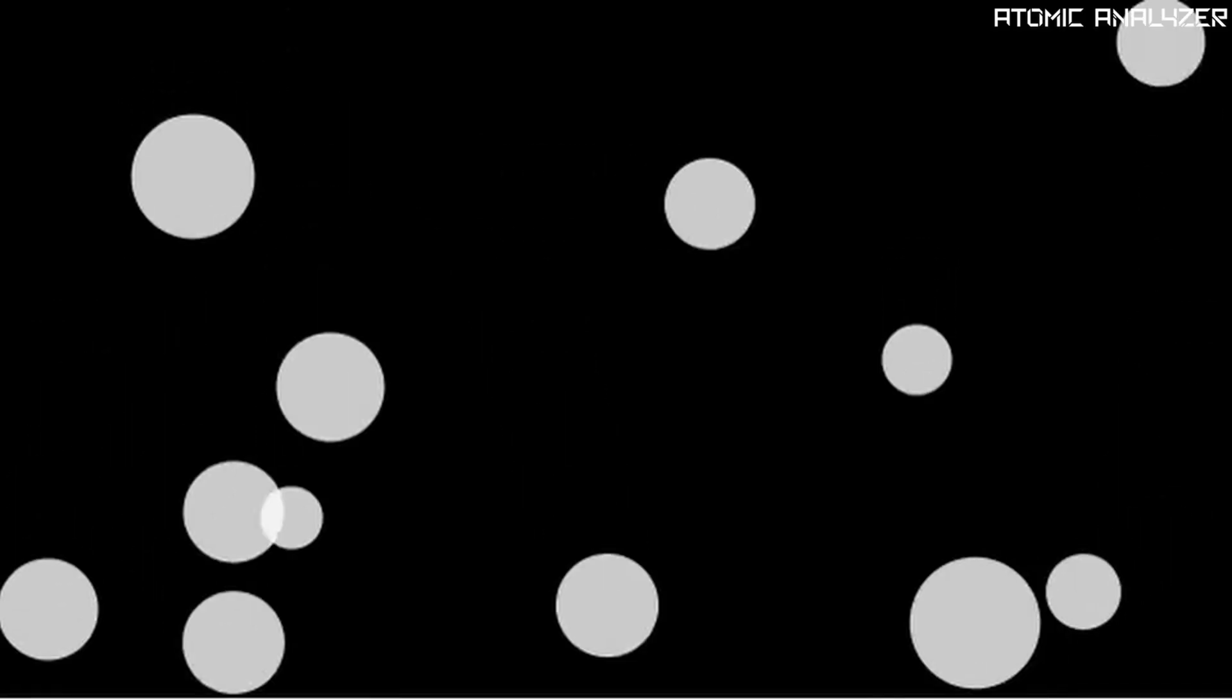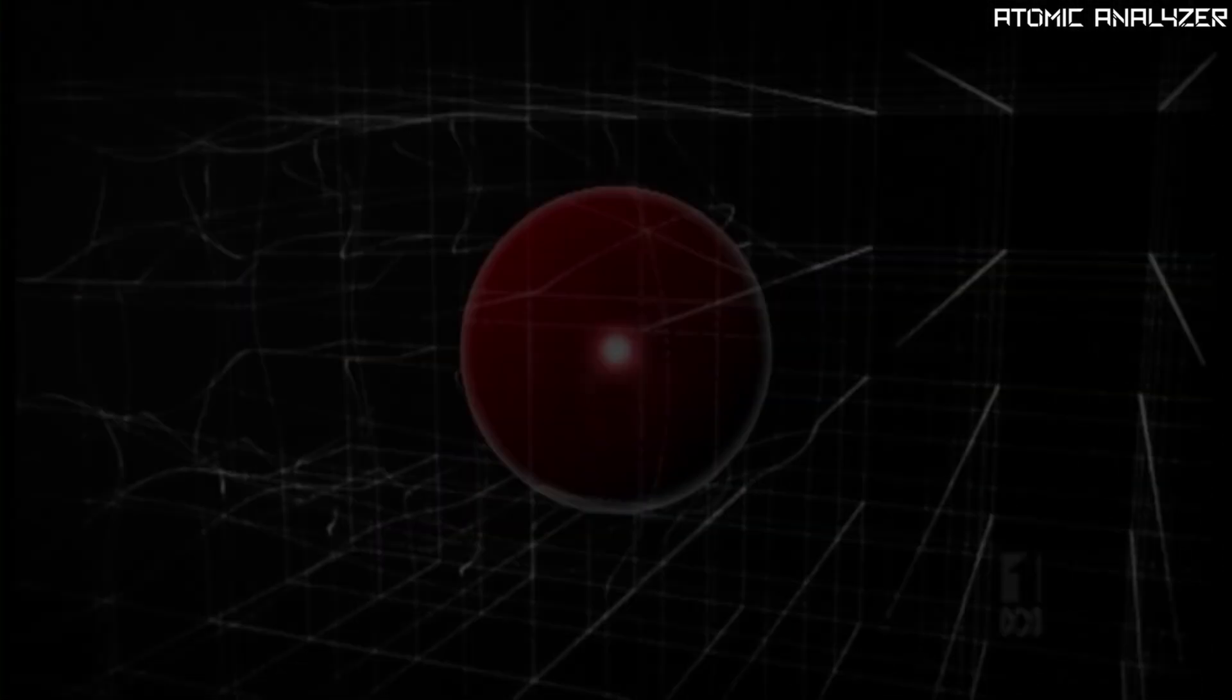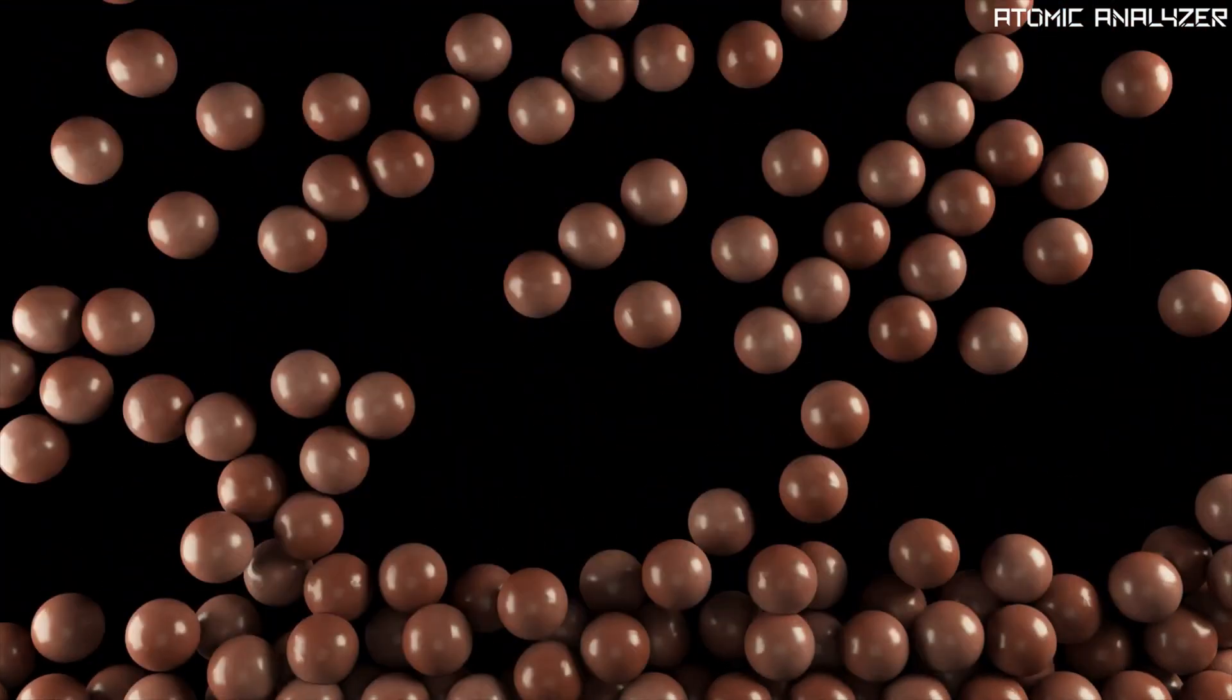Imagine the universe as a cosmic dancefloor and all particles are like dancers grooving to their own tunes, but what set the rhythm? Enter the Higgs field, an invisible energy field that permeates all of space. Just like a sea of molasses, it creates resistance as particles move through it, endowing them with mass.